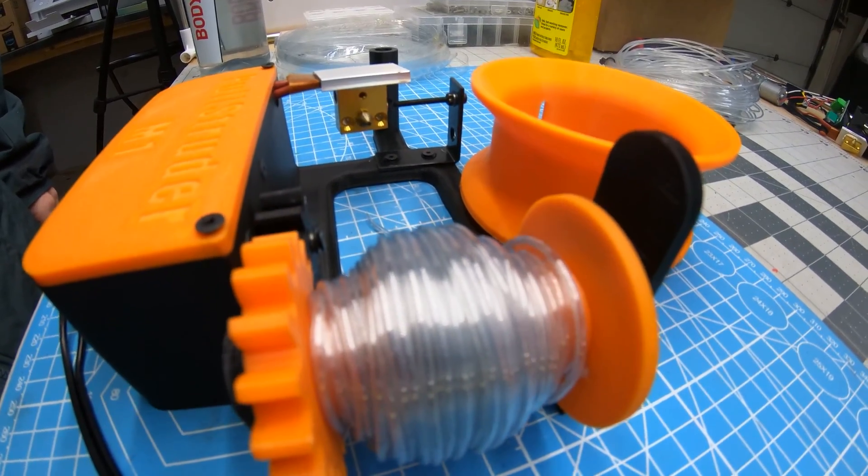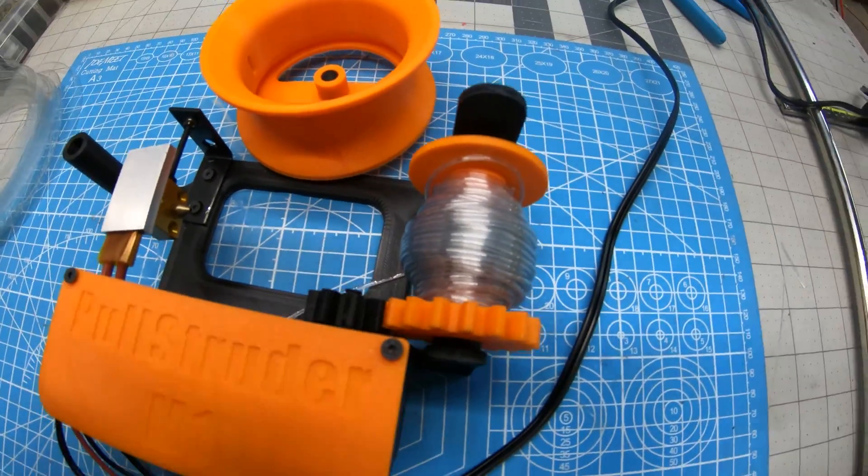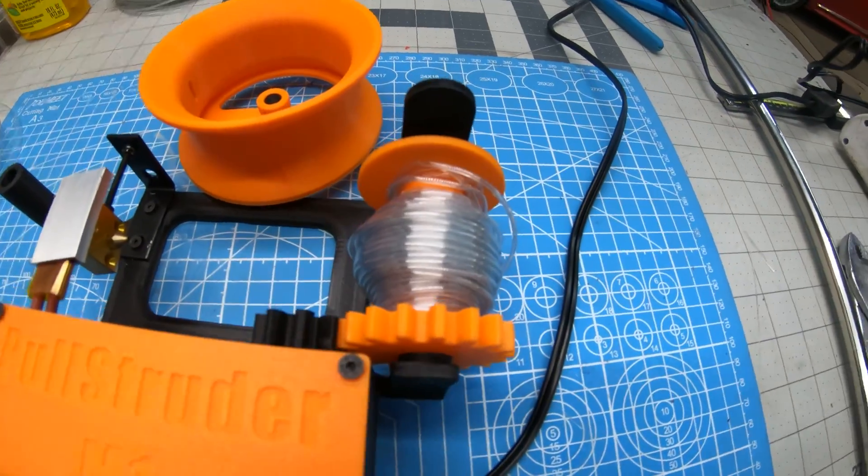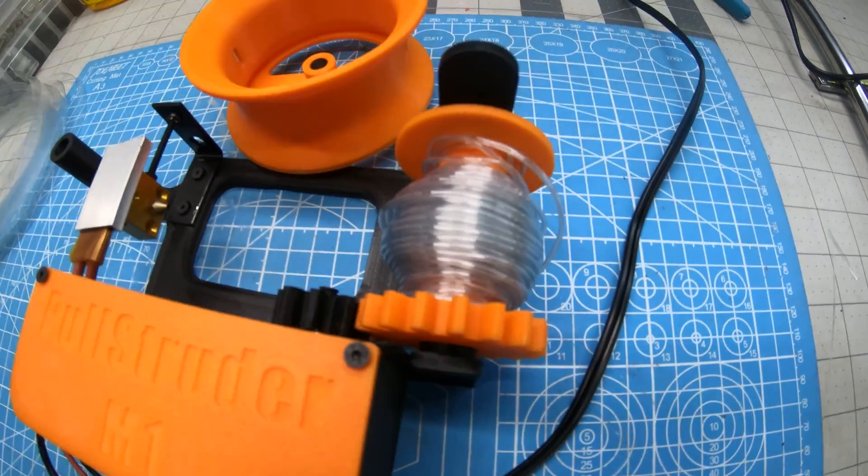So now you can polstrude everything. It takes about 20 to 30 minutes for a full gallon jug. It gives you about 40 grams of filament, which isn't bad. You can print a lot of things with that amount of filament.